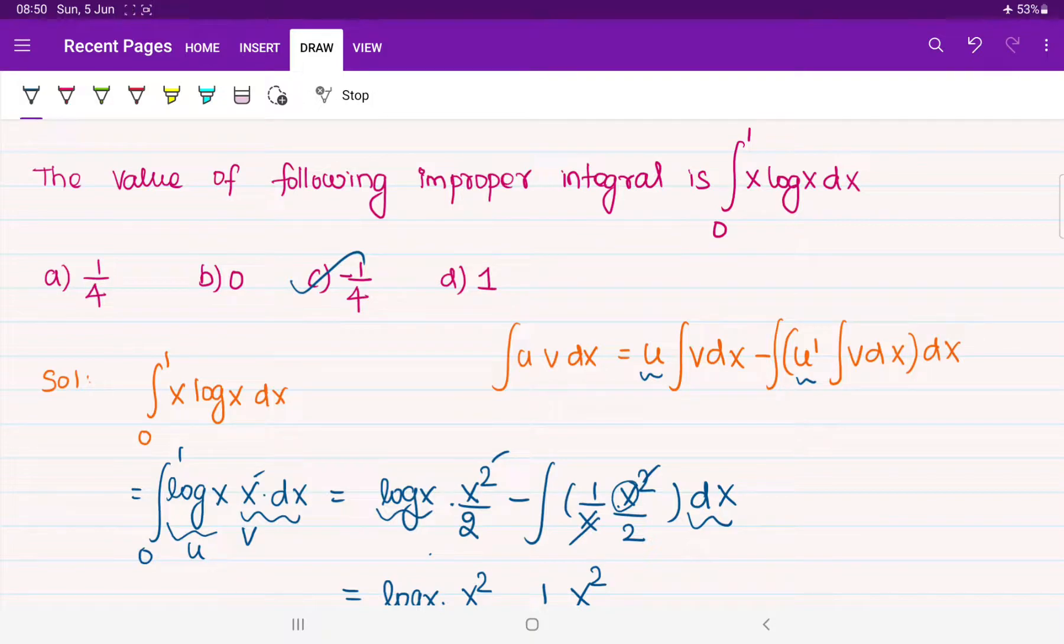When they are giving trigonometric function, then you should think whether it is even function or odd function. When they are giving logarithmic function, then you can try this uvdx method. Like that, by practice, slowly everything will be registered in your mind. Then after that, just by looking into the question, you will be getting the answer. This is all for this lecture. Remaining things we will see in the next class. Thank you all.